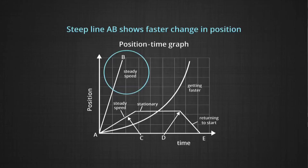Look at segment A-B. This straight line shows that the steepness indicates the position is changing very fast. This is faster than the straight-line section marked as C or the straight-line section marked from D to E.